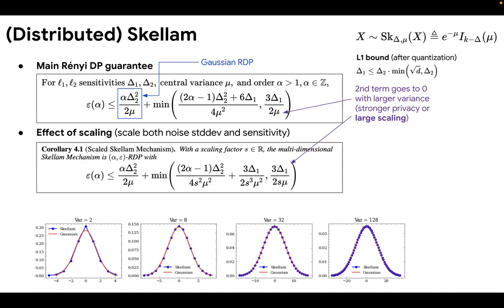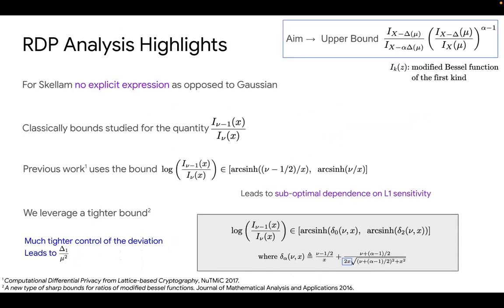This is nice because in practice, when you combine the Skellam mechanism with quantization techniques, a reasonable scaling factor during quantization would make the second term practically zero. In the interest of time, I will briefly highlight the RDP analysis — please check out the full version for more details. When we perform RDP analysis, we look at two shifted Skellam PMFs and try to bound the ratio. For Gaussian, the analogous quantity has a closed form expression, but unfortunately we don't have that for Skellam because we're dealing with Bessel functions. So we need to look at existing bounds on the ratios of Bessel functions. The previous analysis for the Skellam mechanism uses an older bound that leads to bad dependency on L1 sensitivity, and in our work we leveraged a tighter bound from 2016 that allows us to shave off that dependency and hence leads to a rapid decay of the second term of the RDP guarantee.